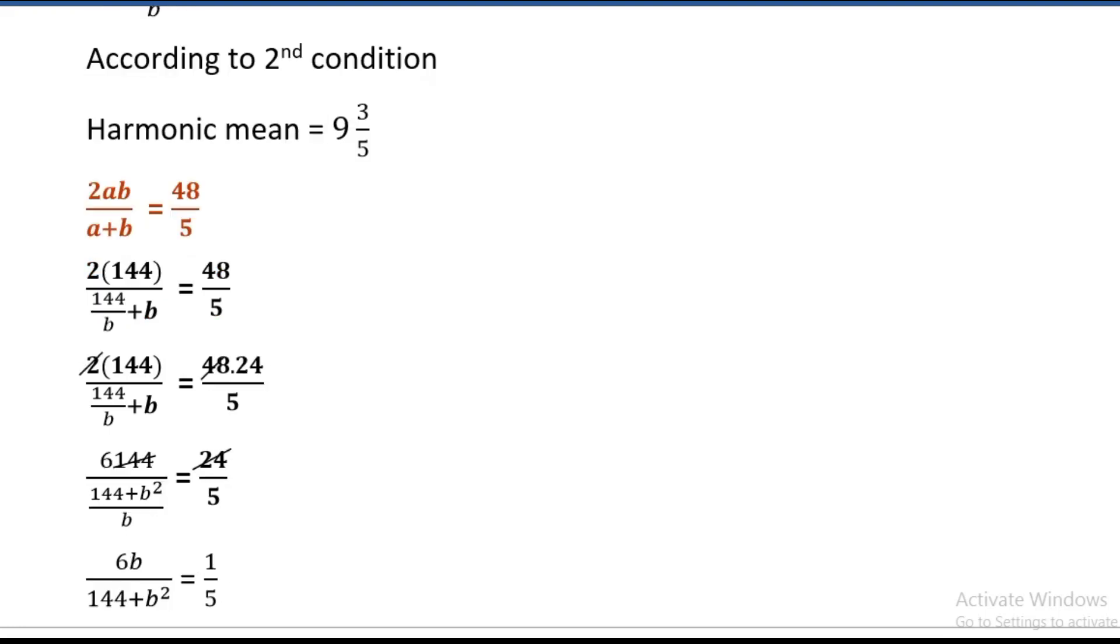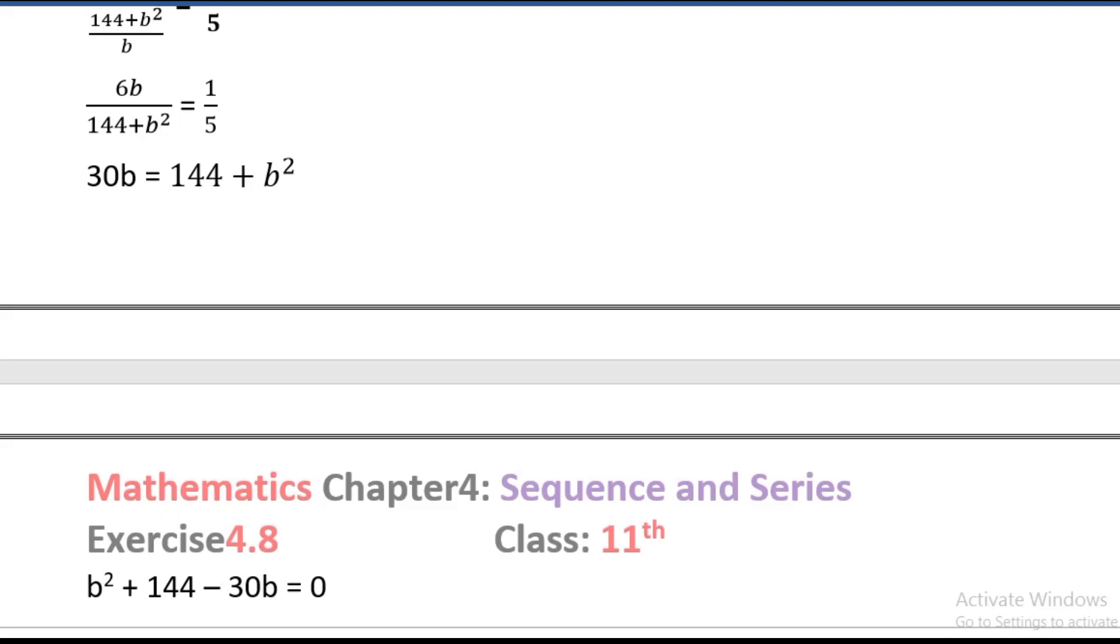By cross multiplication, 6 times 5 is 30b equals 144 plus b squared. Take 30b from left hand side to right hand side, sign will be negative.